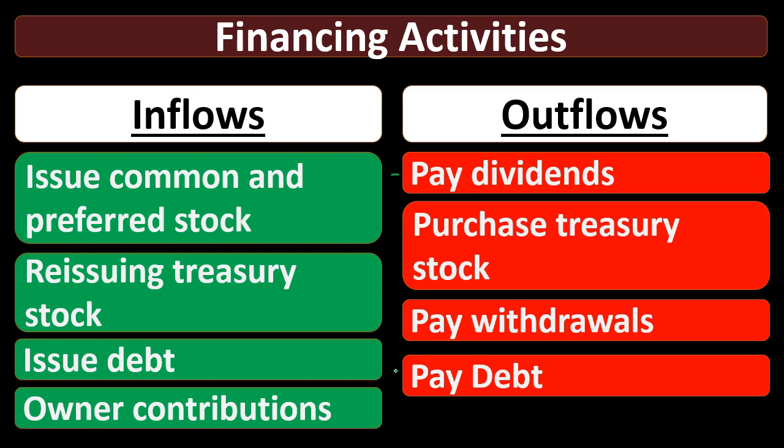When we pay off debt, we credit cash and debit a liability — the note payable. Since neither account is an income statement account, it's not typically an operating activity; it's typically going to be a financing activity.